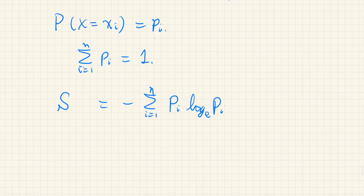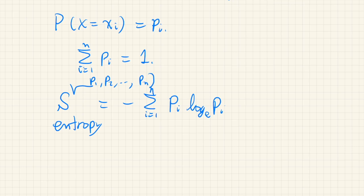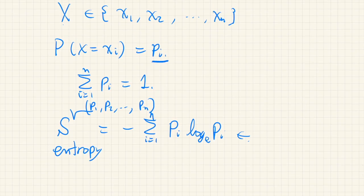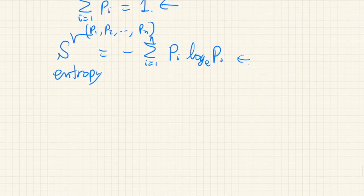This entropy S is a function of p1, p2, and so on up to pn — so it's an n-variable function. We want to maximize this quantity and find what kind of probability distribution pi can be. We need to satisfy the normalization constraint, and otherwise there are no other constraints. To do that we use the method of Lagrange multipliers.